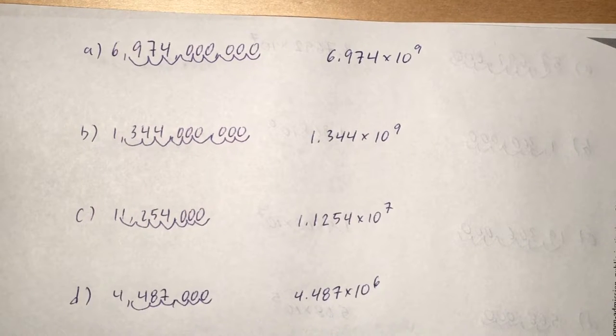And so we use all of the digits that are significant. So the answer would be 6.974. Don't put any of those zeros on there.